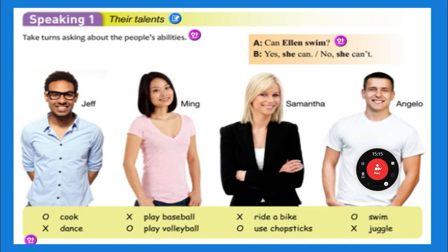One more time — listen and repeat. Can Ellen swim? Yes, she can. Can Jeff cook? Yes, he can. Can Jeff dance? No, he can't. Can Ming play baseball? No, she can't. Can Ming play volleyball? Yes, she can. Can Samantha ride a bike? No, she can't. Can Samantha use chopsticks? Yes, she can. Can Angelo swim? Yes, he can. Can Angelo juggle? No, he can't.